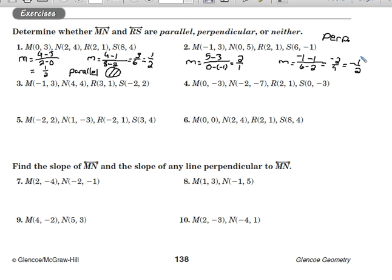Instead of writing the word out, you can use the perpendicular symbol, which is an upside-down T. Let's do number 3. The slope between M and N is 4 minus 3 over 4 minus negative 1, which gives us a slope of 1/5.